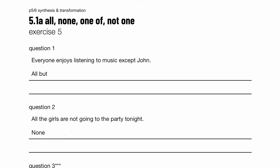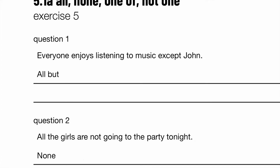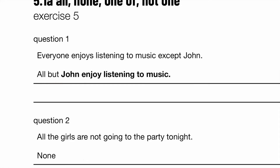Exercise 5: This question uses the word 'except.' Everyone enjoys — present tense, and 'everyone' is singular, therefore 'enjoys' comes with S. Listening to music except John. So: all but John. Now, is it 'enjoy' with S or without S? Well, 'all' — we are dealing with people being plural — so 'enjoy' does not come with S, because we're not talking about John, we're talking about all. 'All' is the subject here, all is plural, so make sure you use a plural verb.